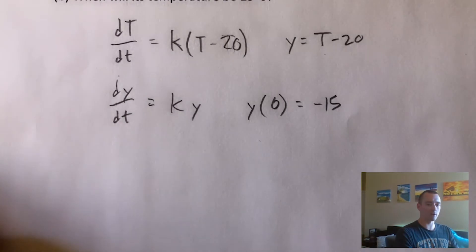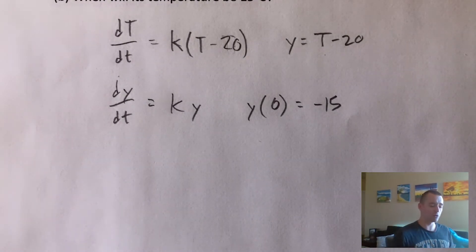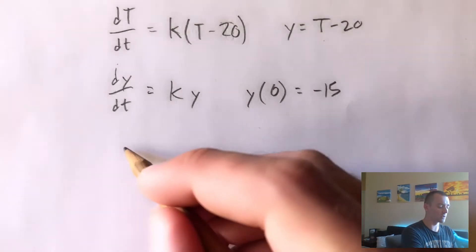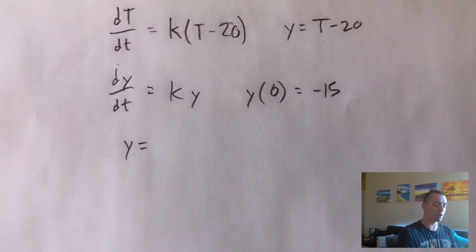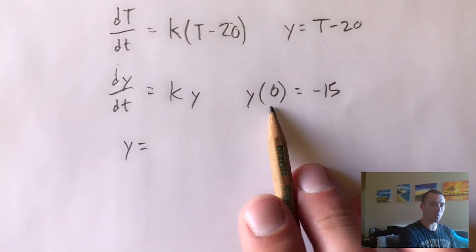So basically what we have now here is an initial value problem, where we have dy/dt equals some constant times y, and then our initial condition is y of zero equals negative 15. Well, one of the other formulas on my integral calculus cheat sheet tells us exactly what the solution of this type of initial value problem is going to be.